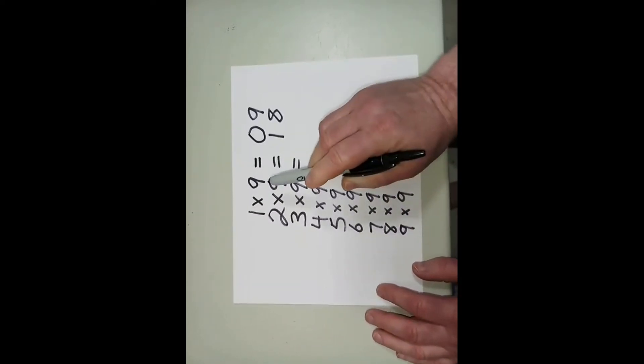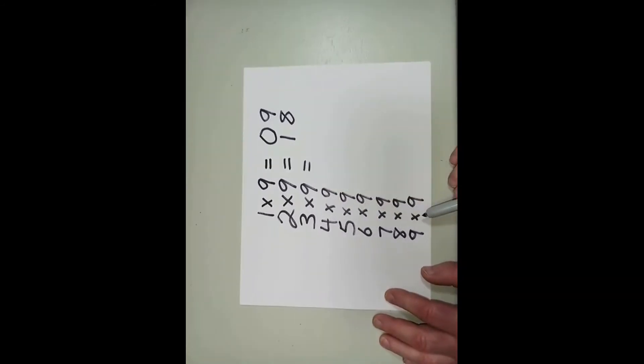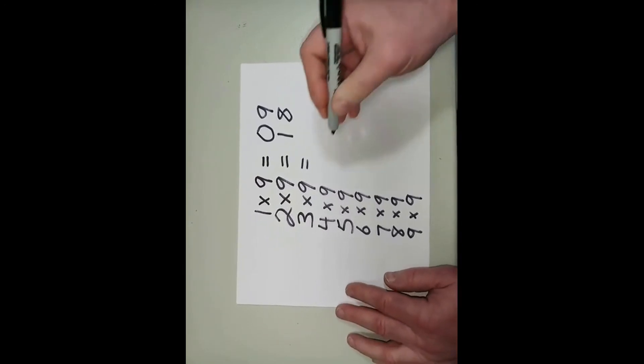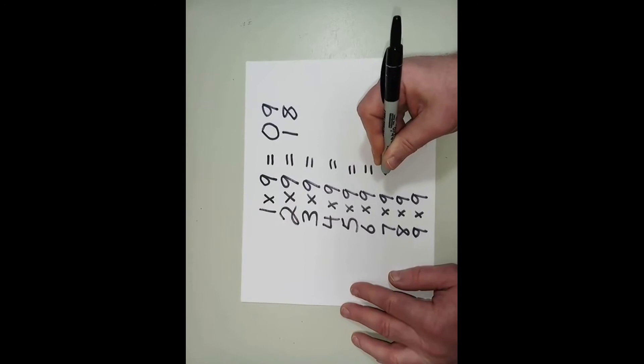So there we have it. We have 1 times 9 all the way through to 9 times 9. Now we're going to look at the answers. Put our equal signs and keep it all lined up.